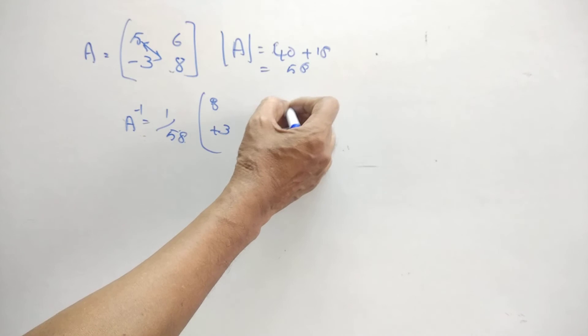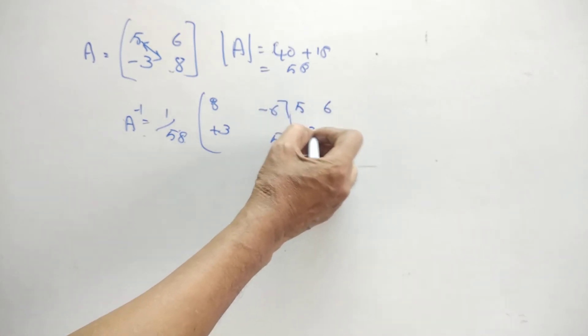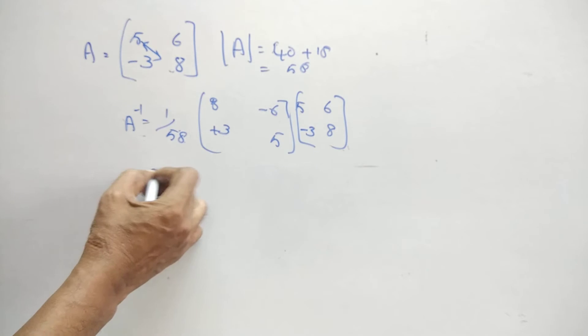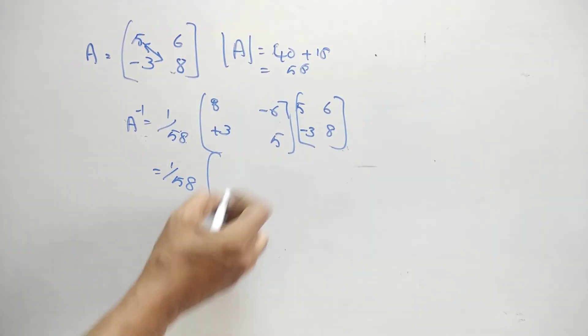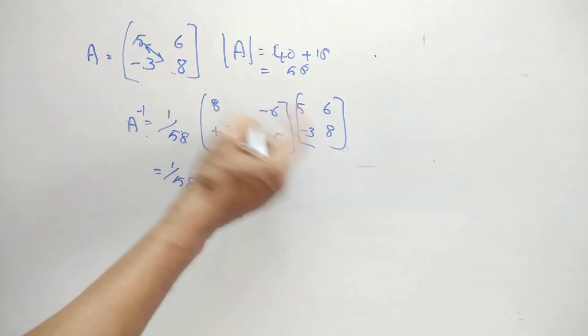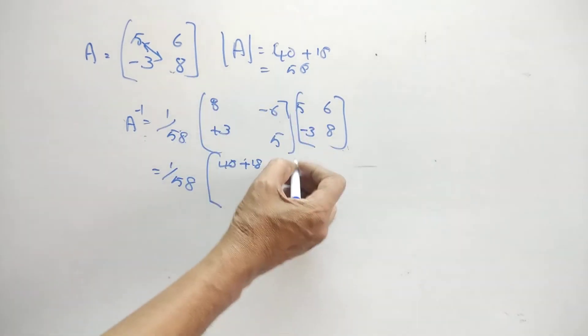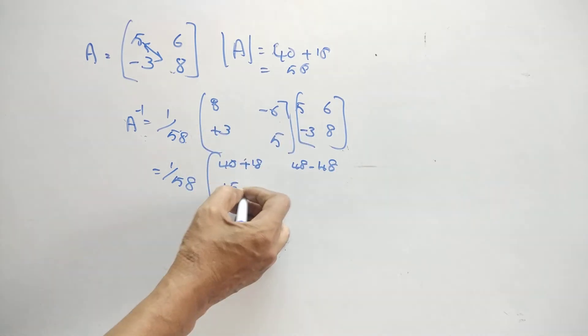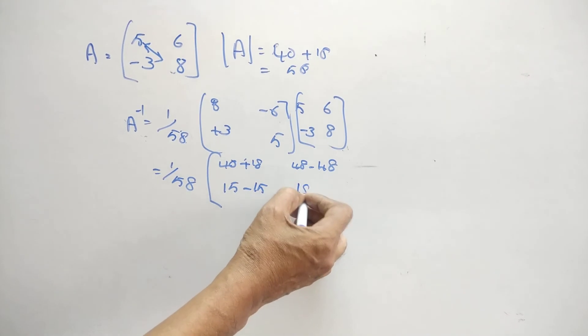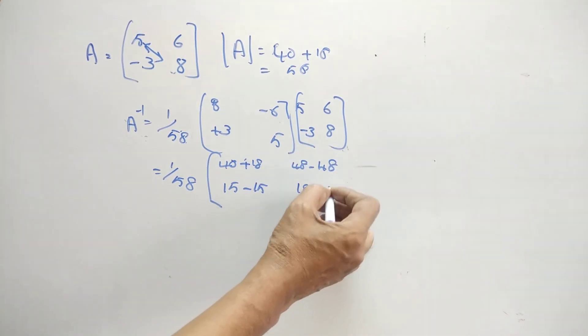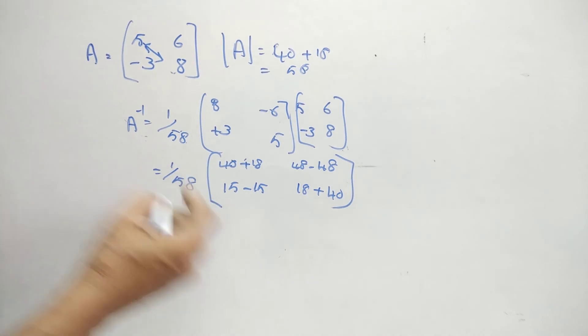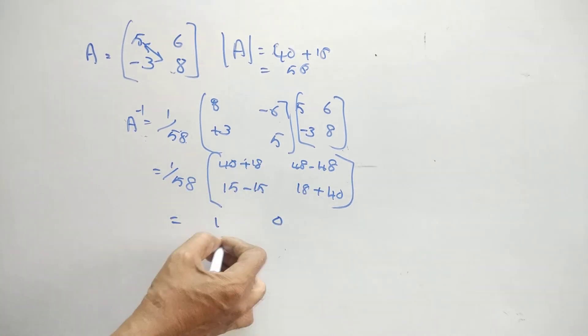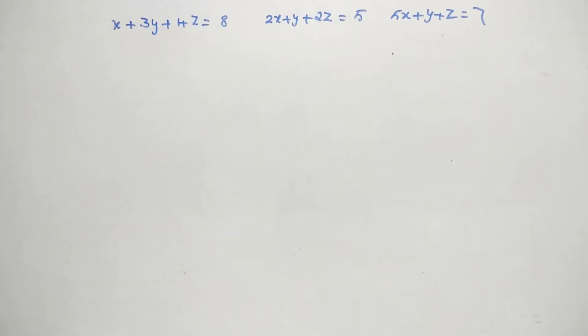And this is A inverse. How to verify that this is correct? You just multiply with the given matrix. So 5, 6 and minus 3, 8. The answer should be identity matrix. Check whether you are getting that. That is 40 and this is 18, the next one is 48, minus 48, the next one is 15 and minus 15, the next one is 18 and this is again 40. So the result is 58 by 58, so 1, this is 0, and this is 0, and this is again 58 by 58, 1. So the inverse is correct. So 2 by 2 matrix is very simple.